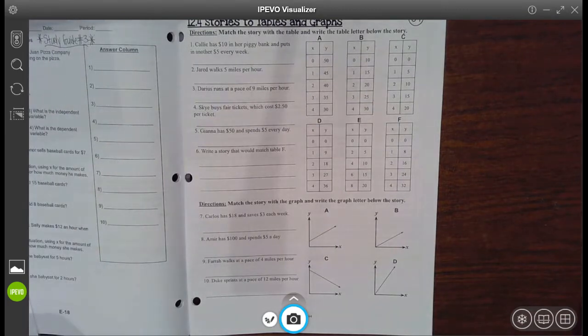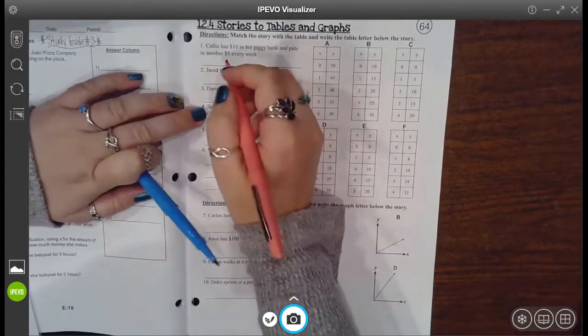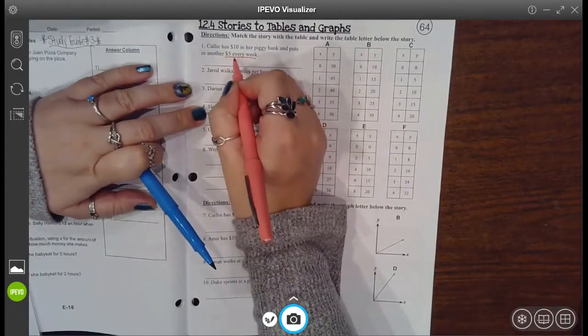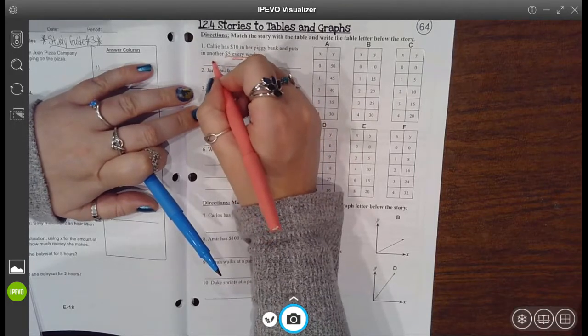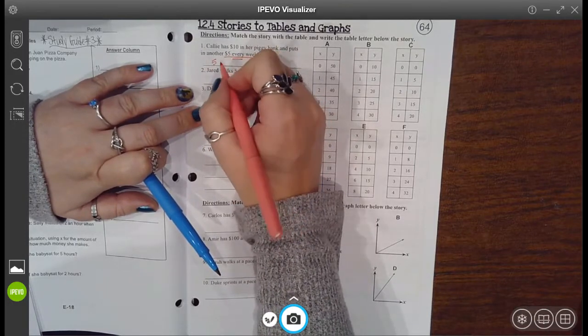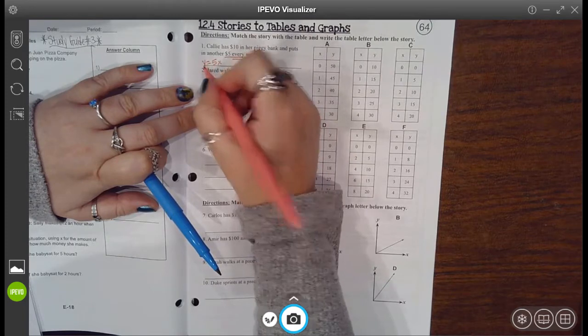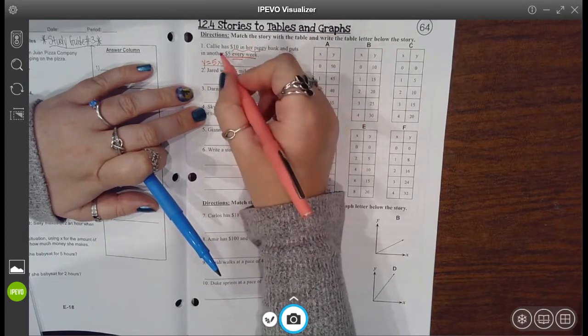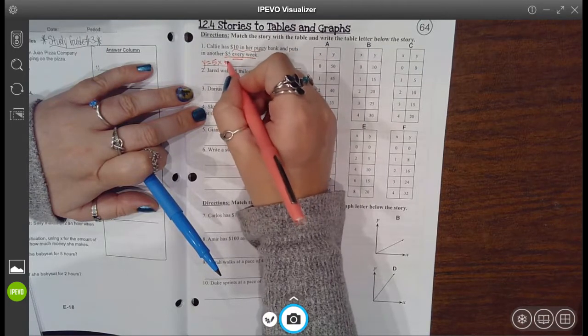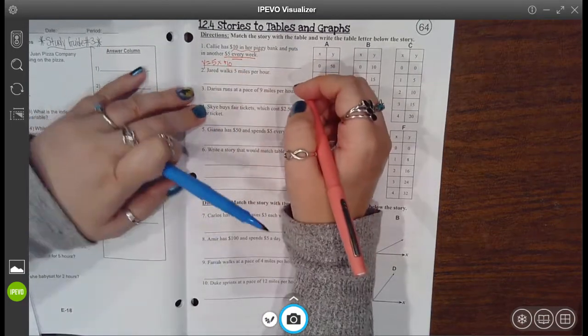Okay, so for this first one it says Callie has ten dollars in her piggy bank and puts in another five dollars every week. Okay, so that per each or every tells me that this is my rate and it's going to get multiplied with my x and that's going to be equal to my y. But then I also have this ten dollars in her piggy bank, like she already has this much. So that's a constant that gets added at the end.